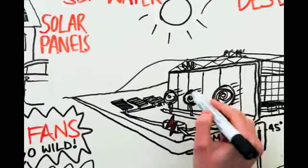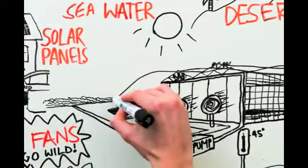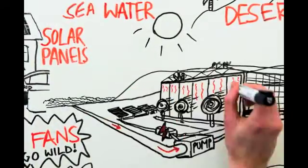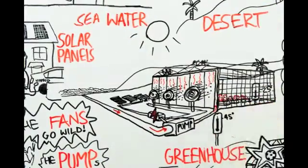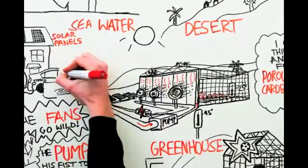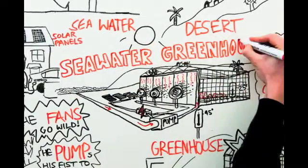Charlie Payton founded the seawater greenhouse to use seawater rather than fresh water to grow food in deserts. He has built them already in Oman, Australia, Tenerife and Jordan. Now he wants to build them in Somaliland, one of the places where they're needed most.